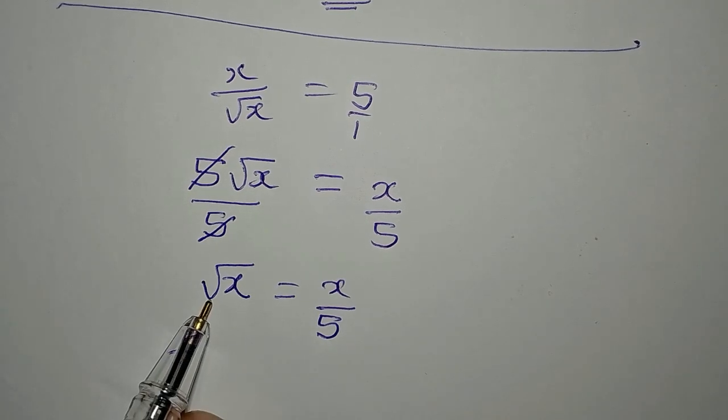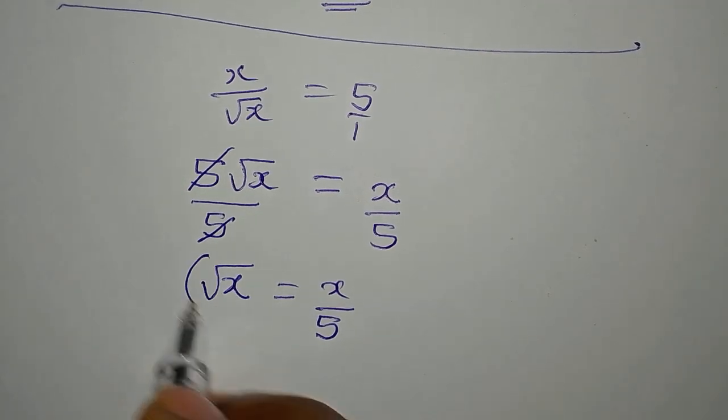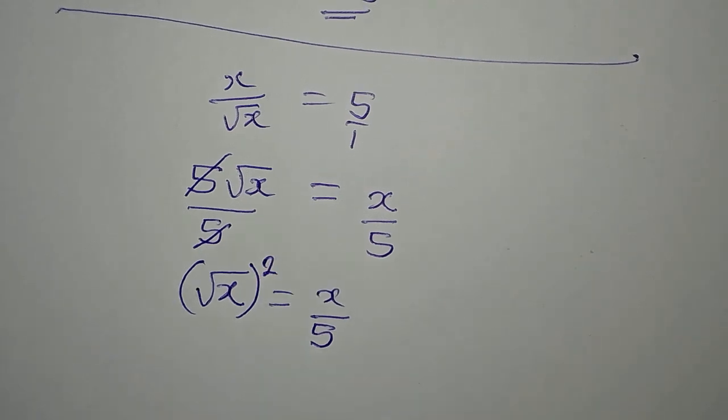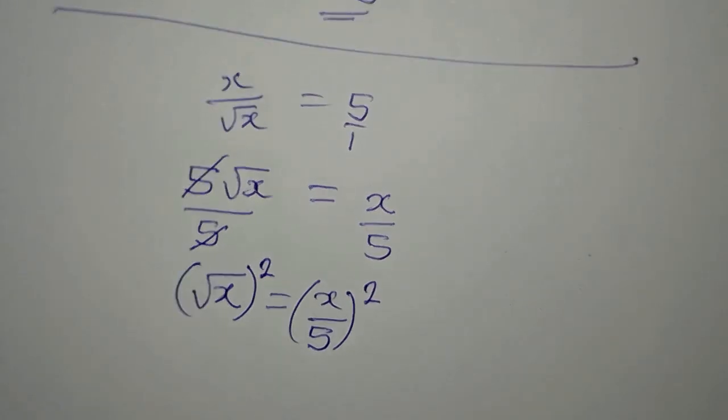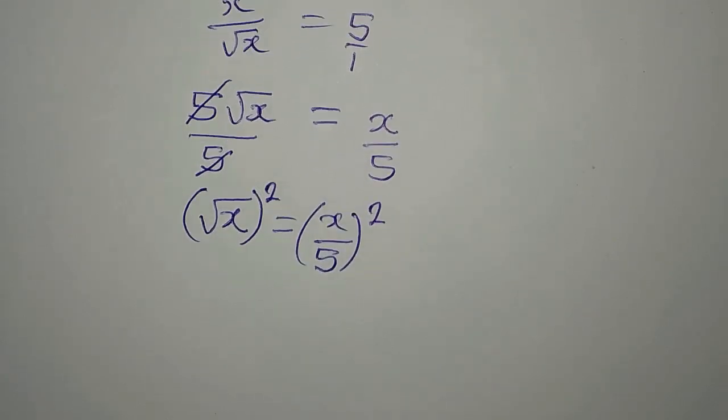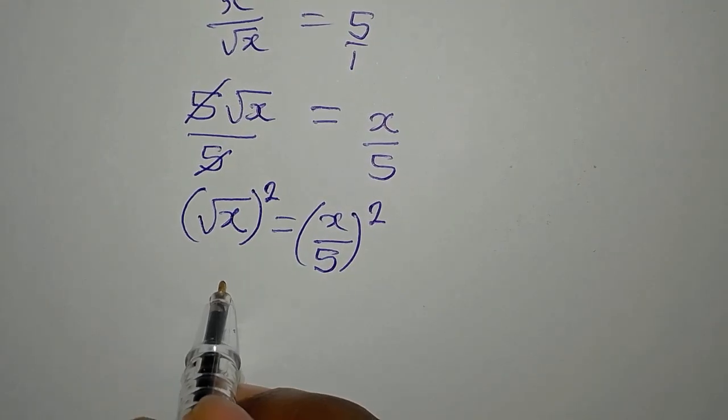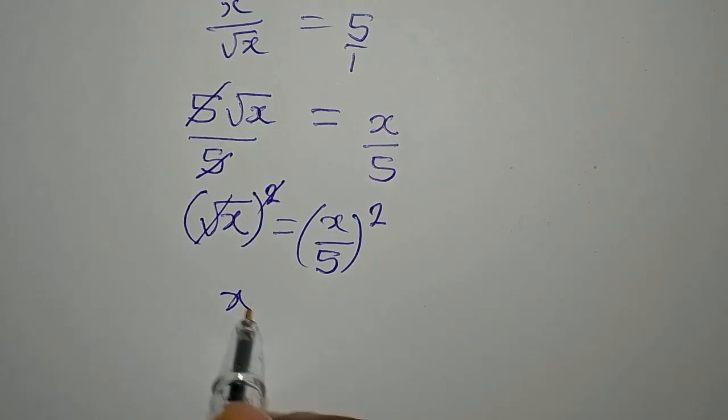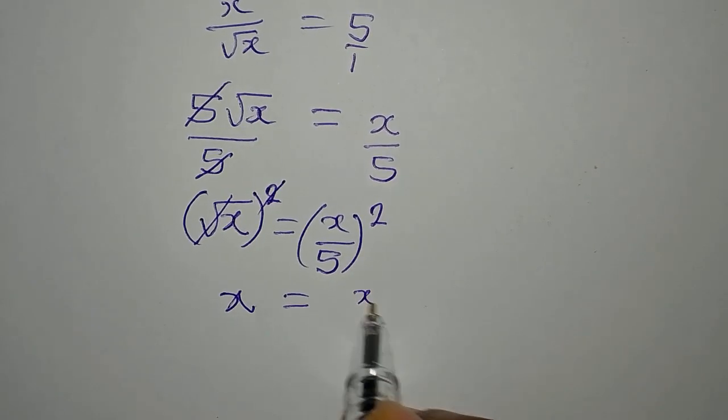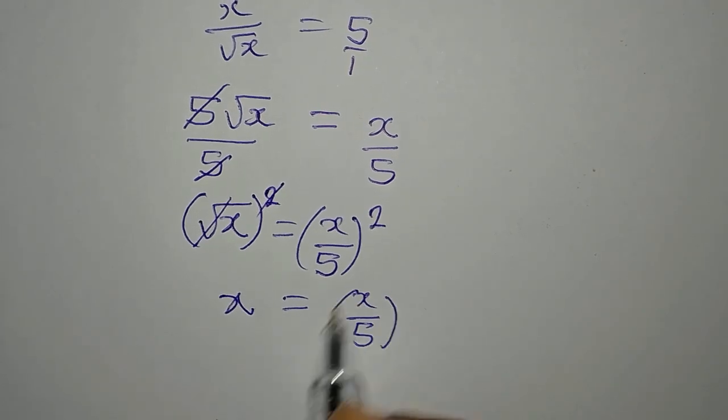And to remove the square root, like we all know, we square it. And then on the right, the square has to reflect. So that from here, this and this can now cancel. And x is equal to x over 5 squared.